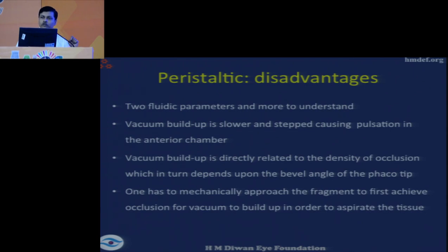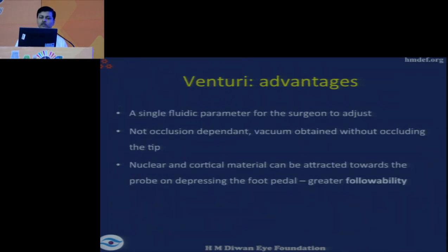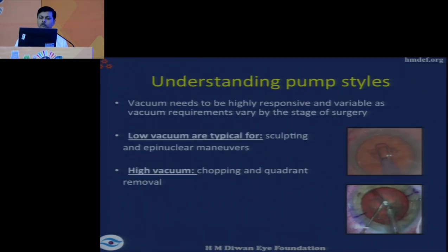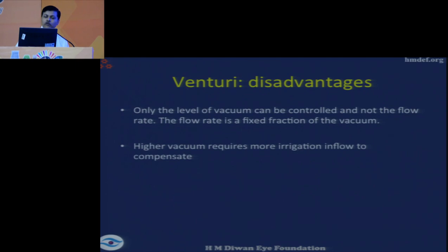Once you have your phaco parameters under control, a venturi pump will probably give you more leverage for operative time. The disadvantages of peristaltic are that you must track two separate fluidic parameters, vacuum buildup is slower and pulsatile by nature, and vacuum buildup is directly related to the density of occlusion — if there is no occlusion at the tip, there is no vacuum buildup, so the surgeon must mechanically approach the fragment before vacuum builds and phacoemulsification can proceed. The advantage of venturi is a single parameter — vacuum — to manage, with vacuum not being occlusion-dependent, so followability is higher and surgical time is less.